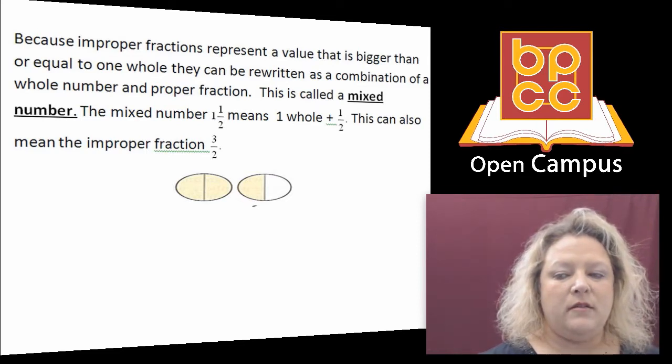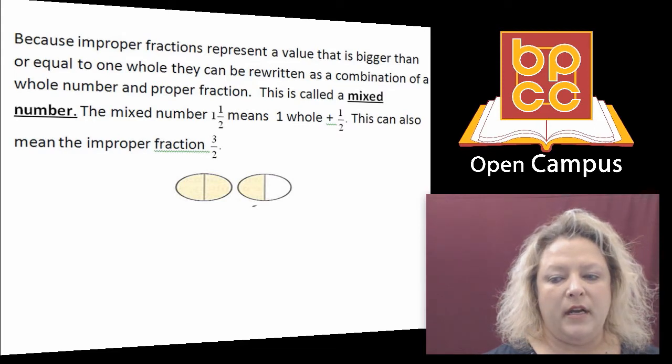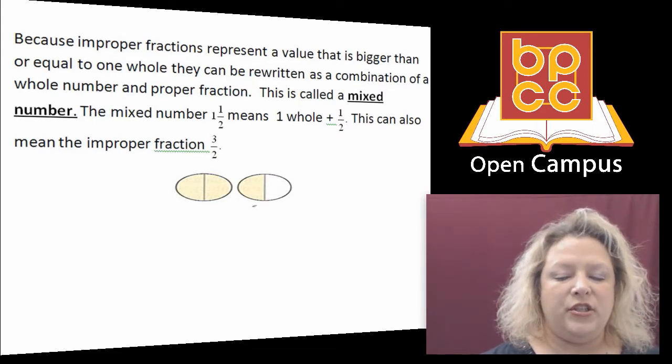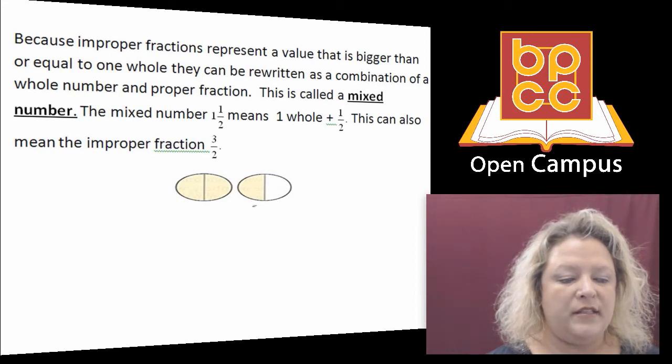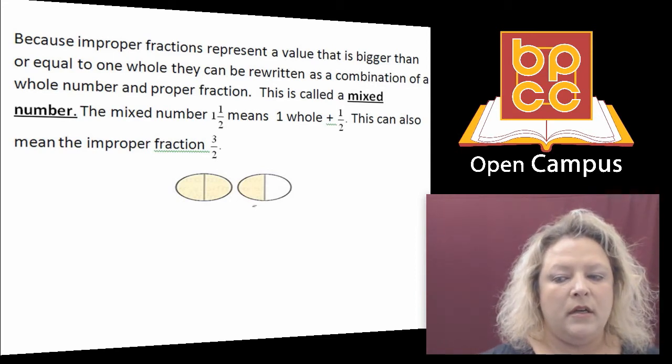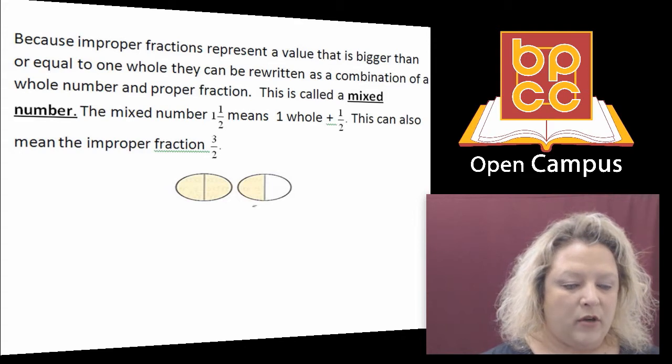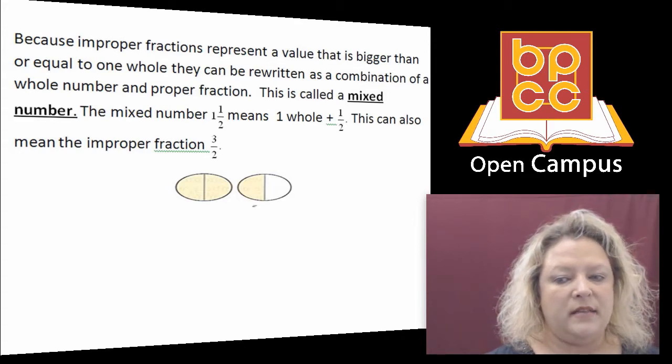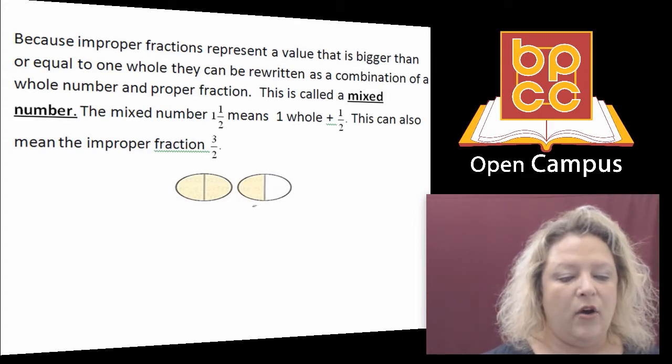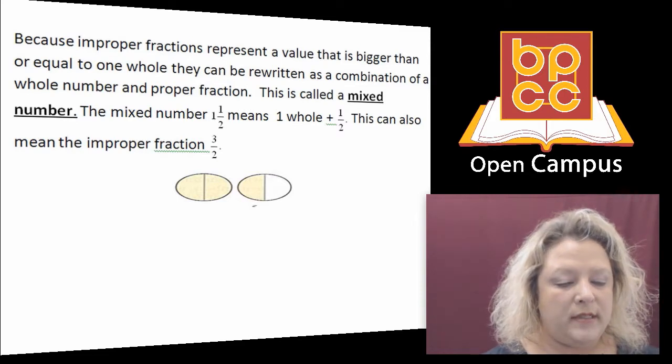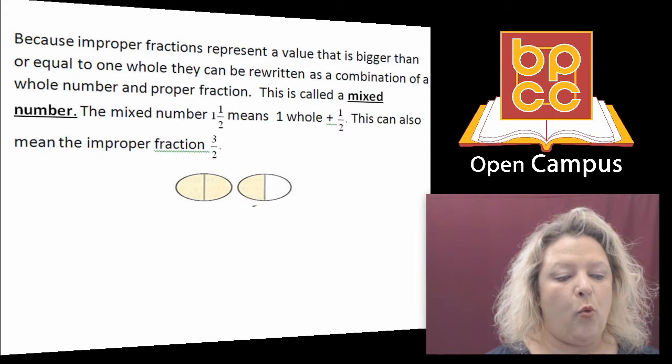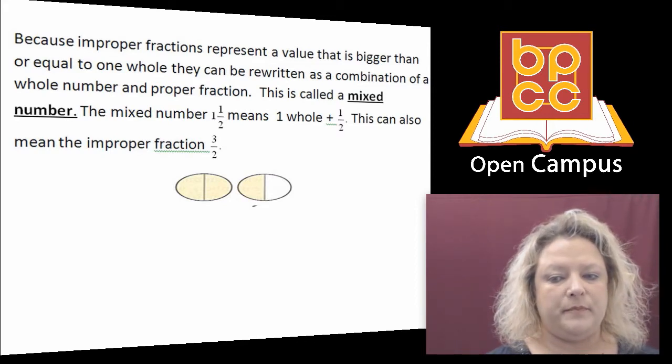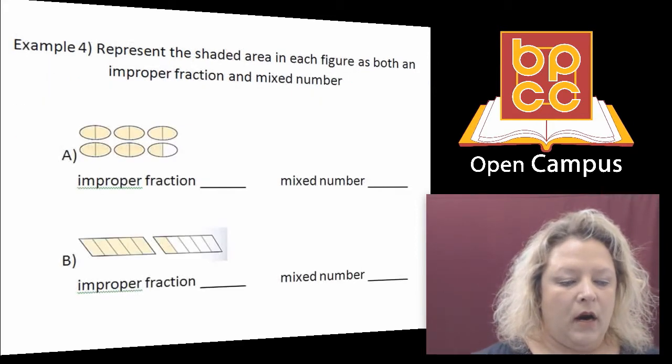So in this little demonstration right here, the little figure, it shows there are two ovals. And with the two ovals, each one is cut into two parts. Three out of those parts are shaded. So that means that would be three shaded over two. Two represents the denominator, which is how many one of the pieces is broken into.